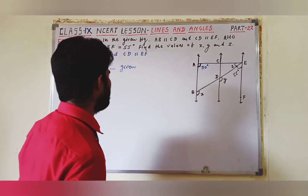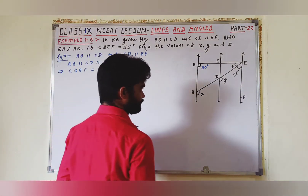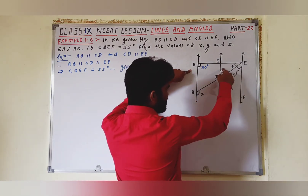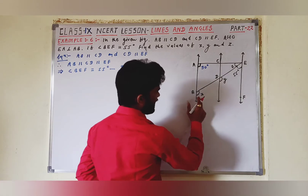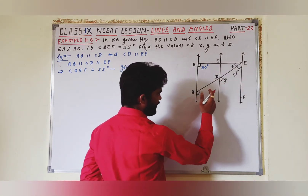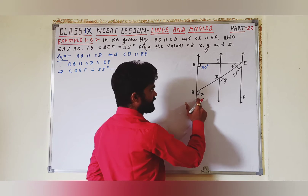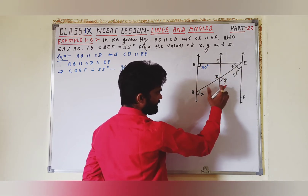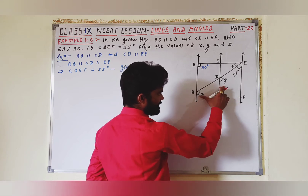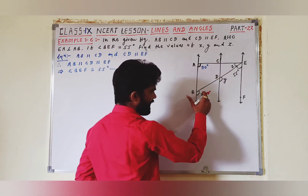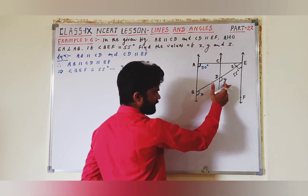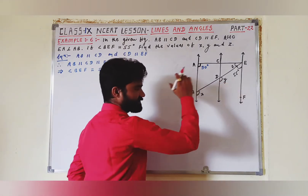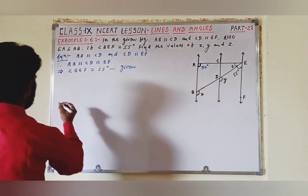XY और Z find out करना है। अब पहले देखो कि AB parallel to CD है। इन lines के ऊपर के angles — angle X और angle Y — यह कौन से angles हैं? Corresponding angles हैं। और जब दो lines parallel हों, तो उनके corresponding angles equal रहेंगे।